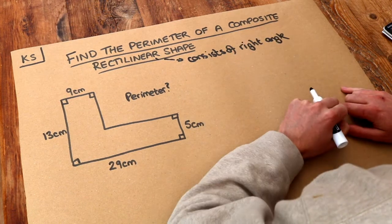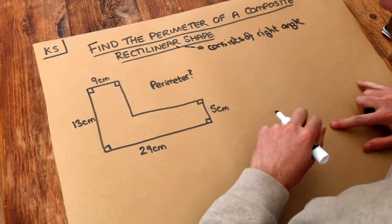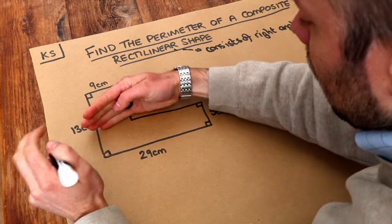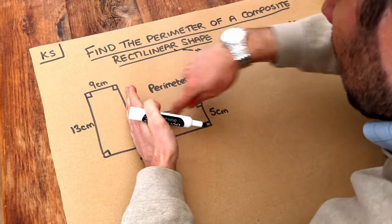And composite, in case you're wondering, just means it consists of multiple simpler shapes. So we can see if we split it either here or here, if we split it like that you can see you've got a rectangle here and a rectangle here.